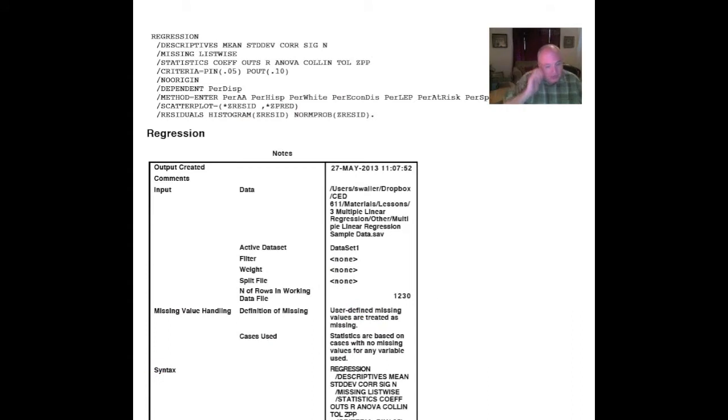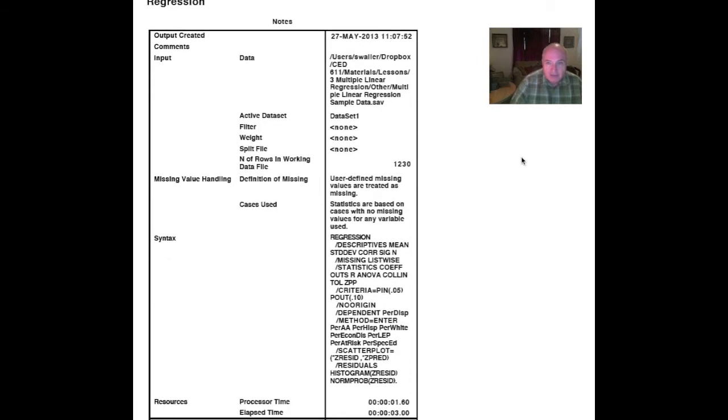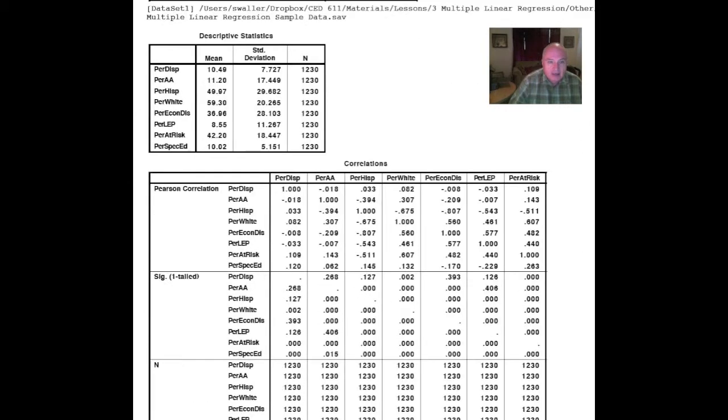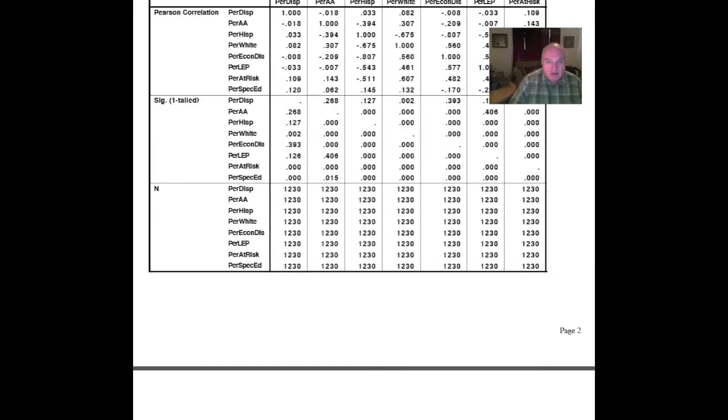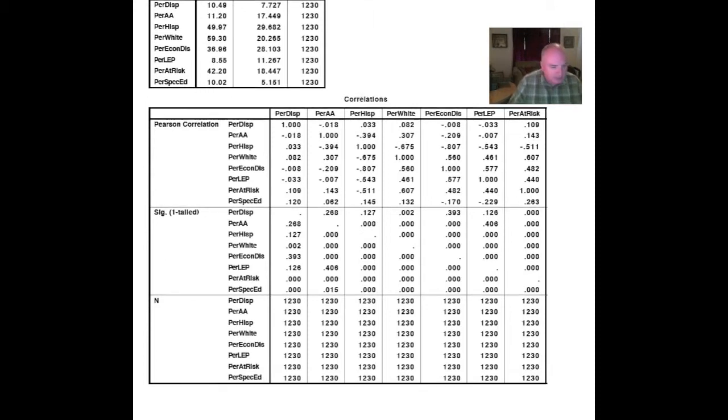Well, my friends, now we will go through the SPSS readout and see what sense we can make out of it. The multiple linear regression begins here. The first thing that we notice is that we have the descriptive statistics for each of the values. We have the mean, the standard deviation, and there are 1,230. Next, I asked for the correlation matrices, where we can compare each of these variables, like percent of disciplinary placements. We can correlate it to each of the other variables. That's important for us as we read through this material.